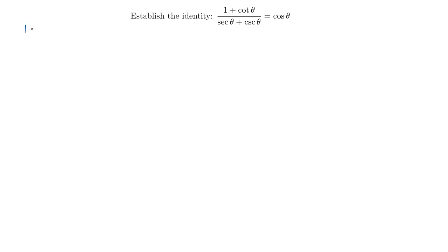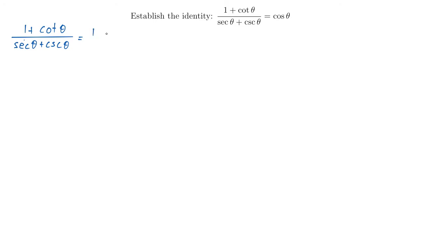So I'm just going to go ahead and write that down: 1 plus cotangent theta divided by secant theta plus cosecant theta. And let's see what that is equal to. Probably the best place to start is to just write everything in terms of sines and cosines.